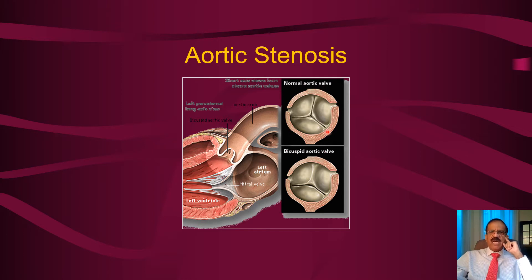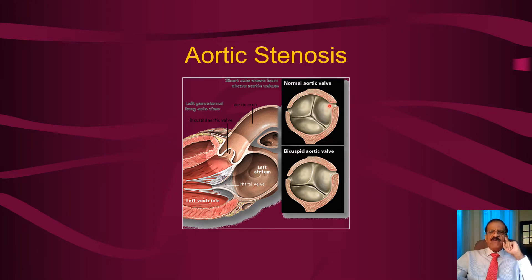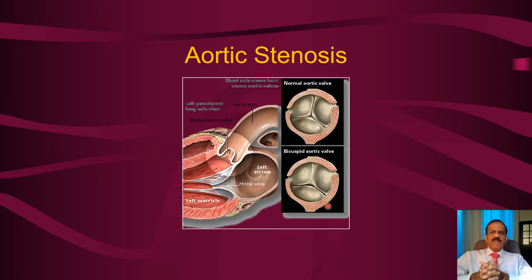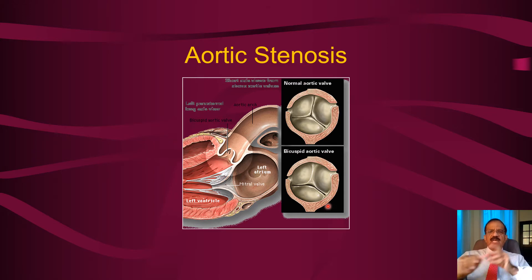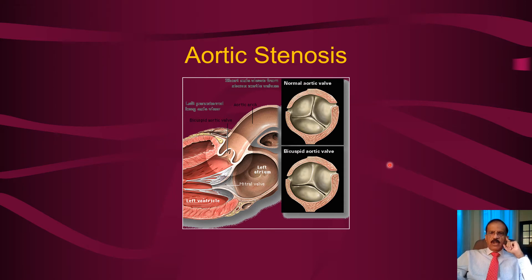The aortic and pulmonary valves are tricuspid — don't confuse this with the tricuspid valve situated between the right atrium and right ventricle. We refer to the aortic and pulmonary valves as tricuspid because they have three cusps. In some cases the two cusps may remain fused congenitally, producing a bicuspid aortic valve. This is one of the etiologies of aortic stenosis. In the developed world, congenital causes are commonest; in our part of the world, rheumatic is still the commonest, but bicuspid aortic valve disease definitely exists here too.